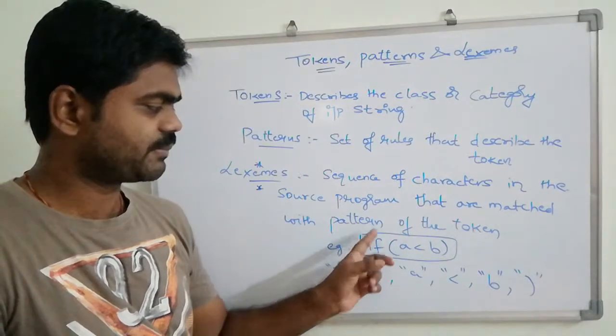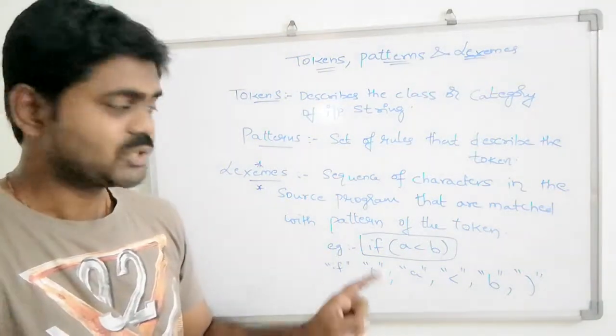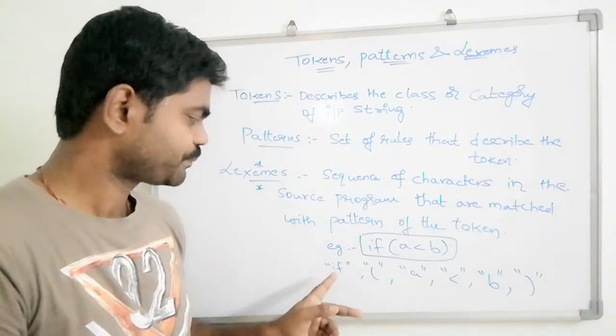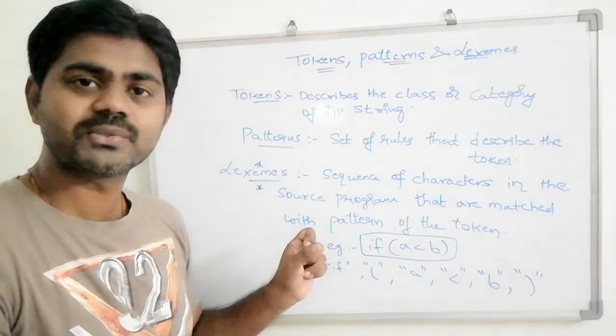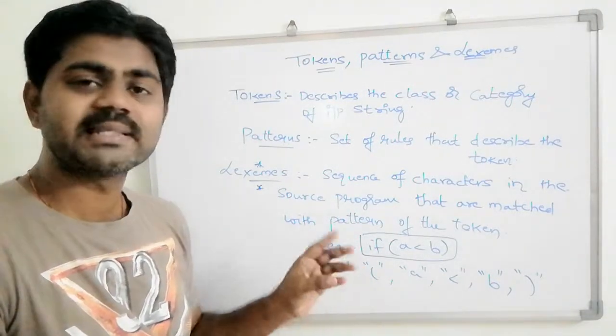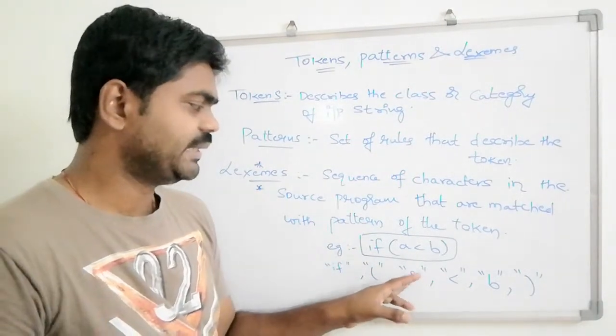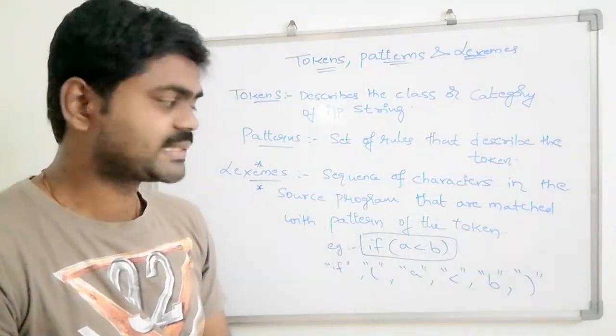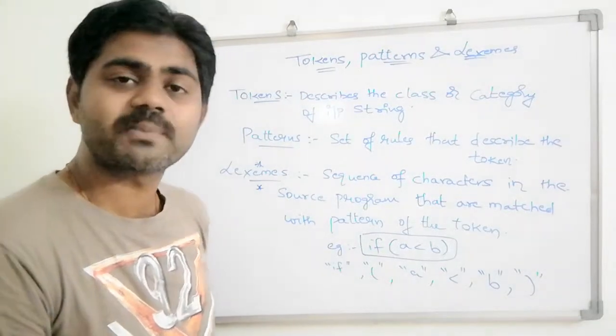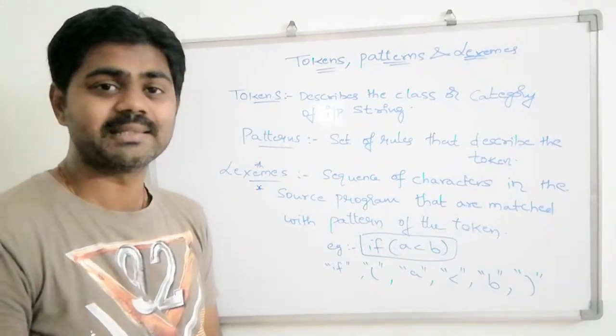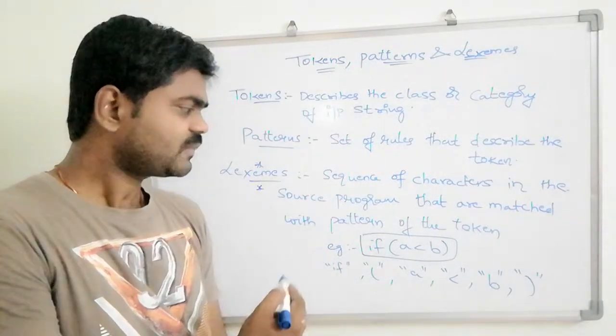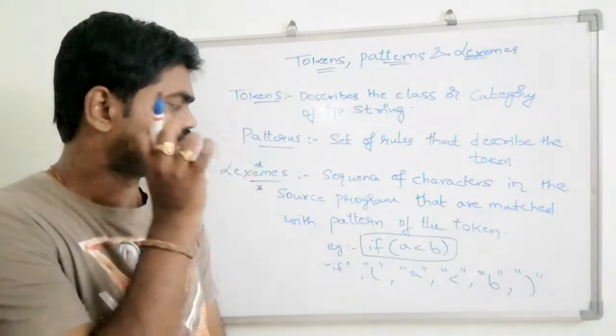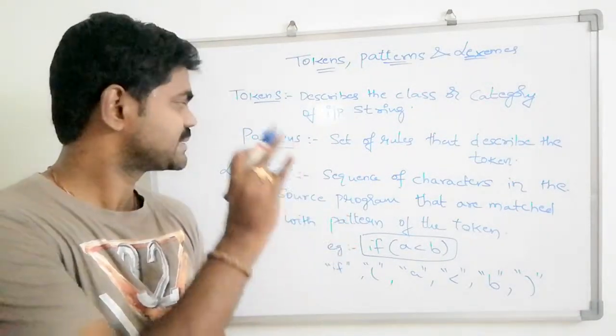What is lexemes here? Sequence of characters in the source program matched with the pattern of the token. Let's take an example: if brackets a comma b brackets close. Each and every alphabet is a lexemes here, quoted in double quotes. If in double quotes is a lexemes, comma open brace in double quotes is a lexemes, a in double quotes is a lexemes, less than symbol in double quotes is a lexemes.